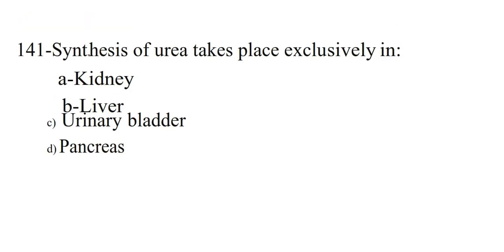Next question. Synthesis of urea takes place exclusively in: Option A Kidney, Option B Liver, Option C Urinary bladder, Option D Amphoteric. Answer: Liver.